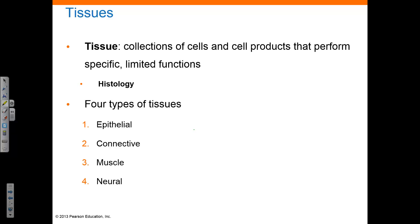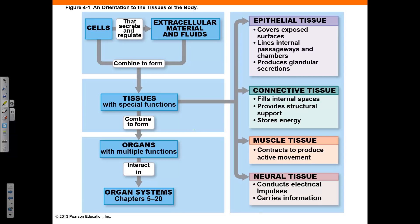Tissues are collections of cells and cell products that perform specific and limited functions. Histology refers to the study of tissues and there are four types: epithelial, connective, muscle, and neural. Cells and the extracellular material and fluids combine to form tissues. Epithelial tissue covers both internal and external surfaces and can also produce glandular secretions. Connective tissue provides structural support and stores energy. Muscle tissue can contract and provide movement, and neural tissue can conduct electrical impulses and carry information.